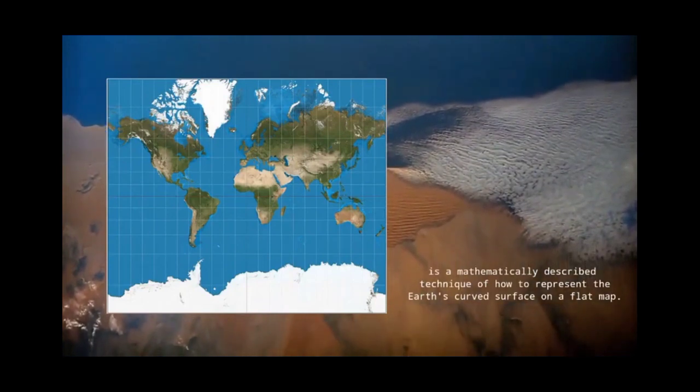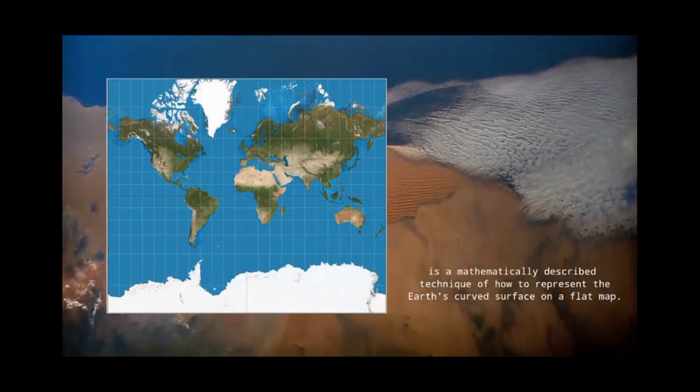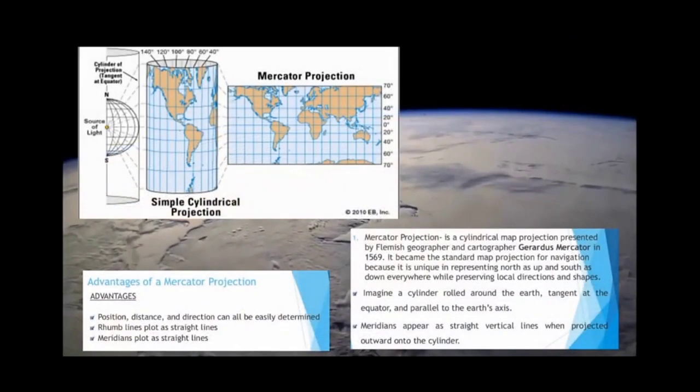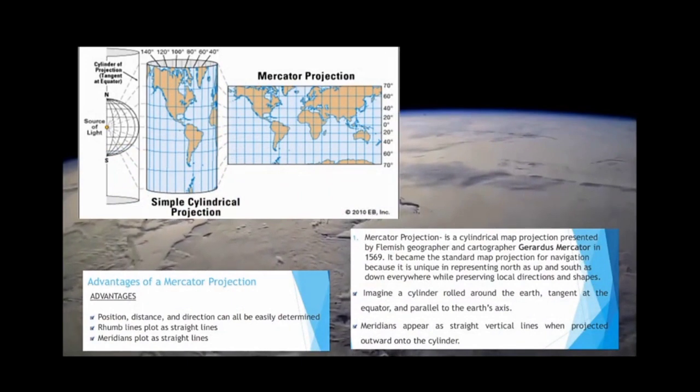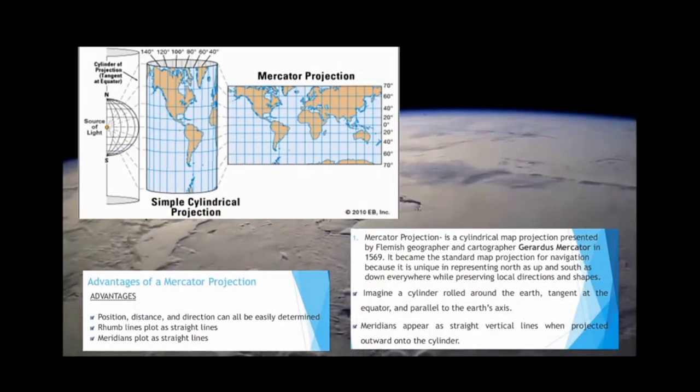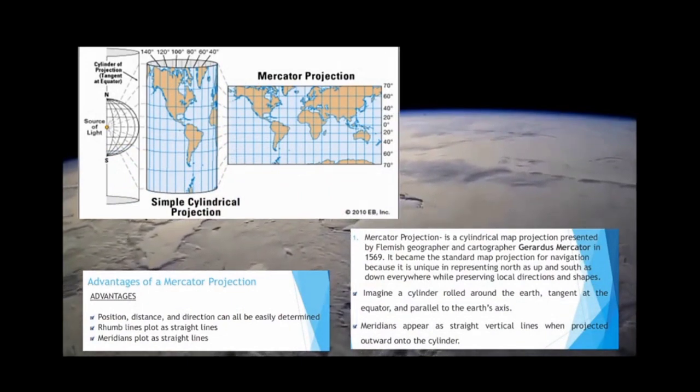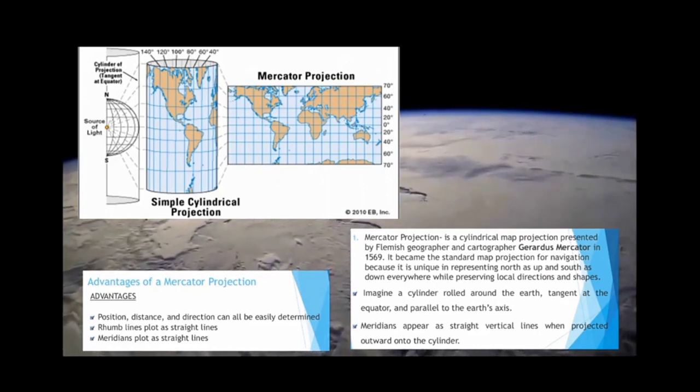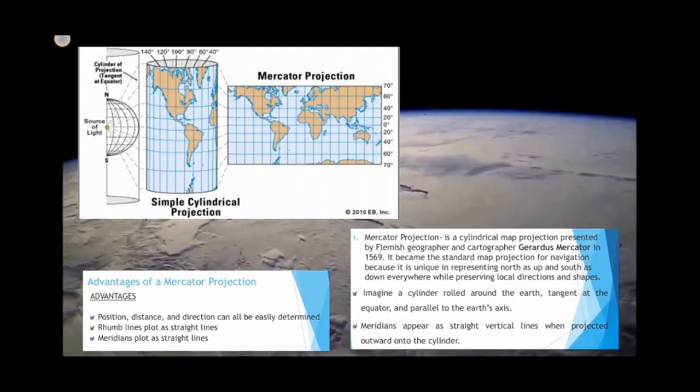Map projection is a mathematically described technique of how to represent the Earth's curved surface on a flat map. Mercator projection is a cylindrical map produced by a cylindrical surface around the Earth tangent at the equator and parallel to the Earth's axis. Meridians appear as straight vertical lines when projected outward onto the cylinder.